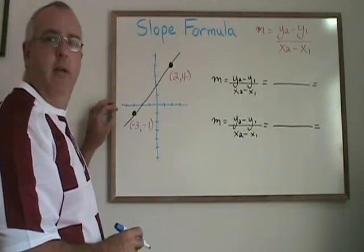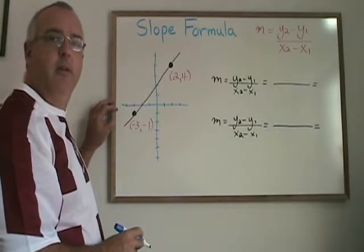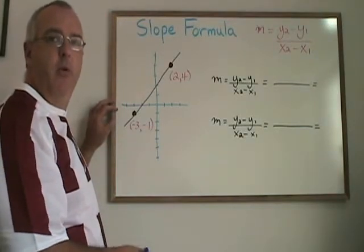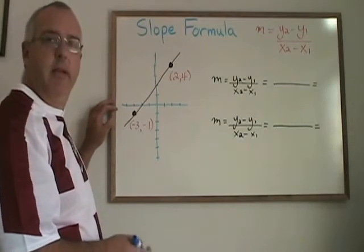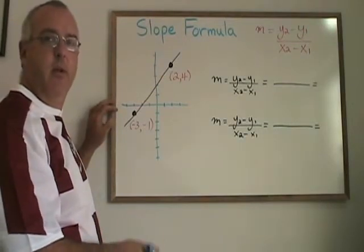x1 and y1 represent the x and y coordinates of the first point, point 1. And x2 and y2 represent the x and y coordinates of the second point, point 2.